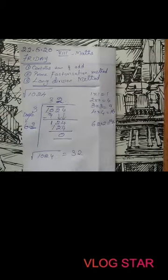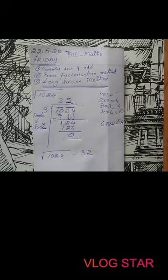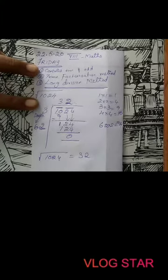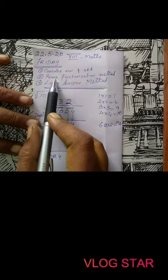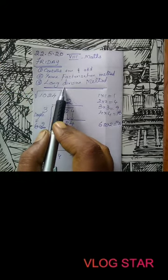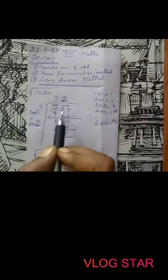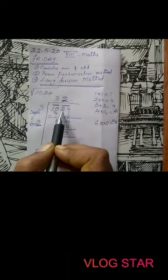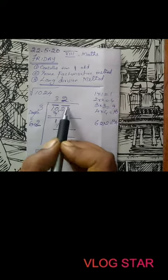Let me repeat. In finding square roots, we started with continuous addition of odd numbers, then prime factorization — but for very large numbers prime factorization is very difficult. So we use the long division method. Whenever a number is given, from the units place we consider digits in pairs and put a bar on top of each pair.